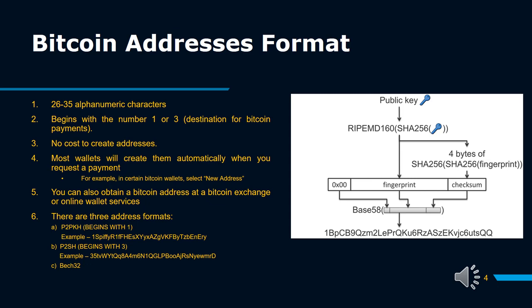C. Bech32 — SegWit address. Bech32 is a new Bitcoin address and is the most advanced one compared to the other two address types. It starts with BC1 and is longer than P2PKH and P2SH. Bech32 is a SegWit address and supports multiple wallets and several other addresses, and is the most popular address used today. Transactions with Bech32 are faster, fees are lower, and it also reduces the chance of human error.